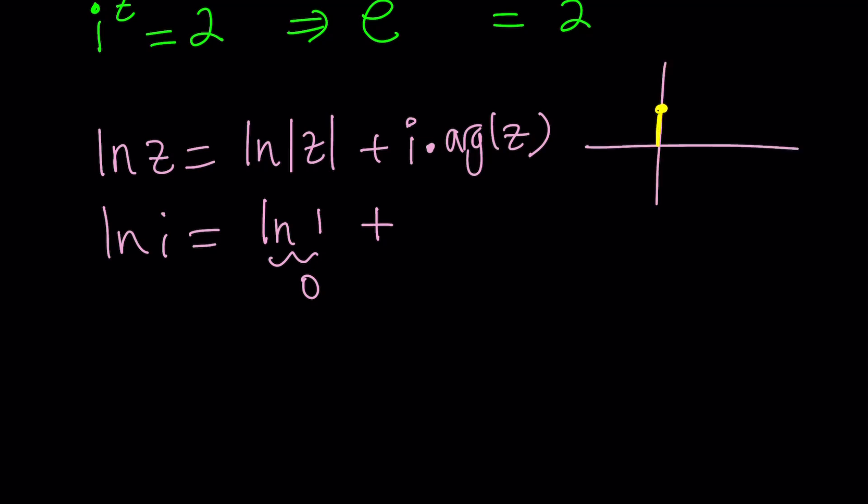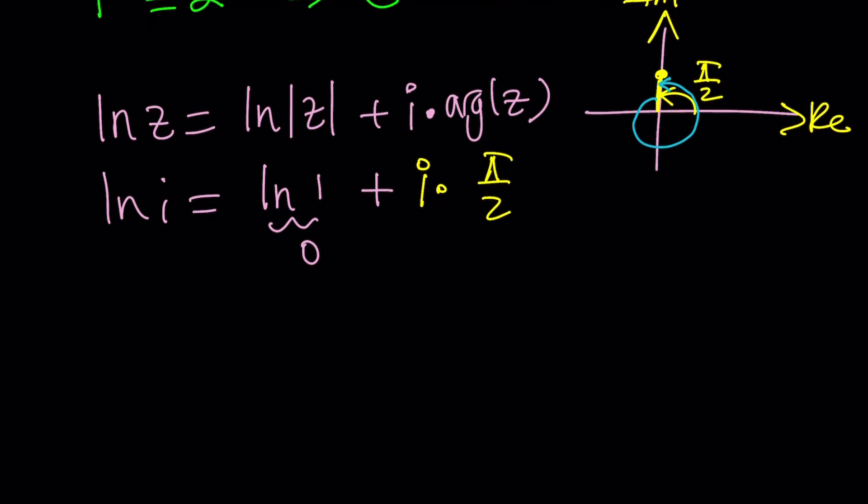And that argument can be found on the Argand plane easily. Actually, i is right here, modulus is 1, and the argument is just going to be π over 2 radians, because that makes a 90 degree angle. So we have i times π over 2. But π over 2 is only the principal value. So you're allowed to make rotations, so you can add a 2π to this, and it's going to bring you to the exact same point. It's going to be a different argument, but the value at the end is still going to be i. So make sure I clarify that.